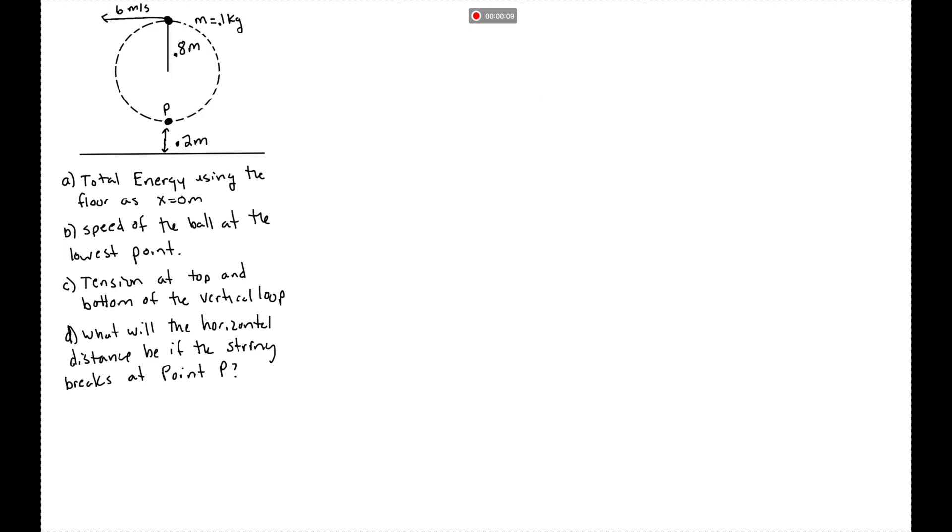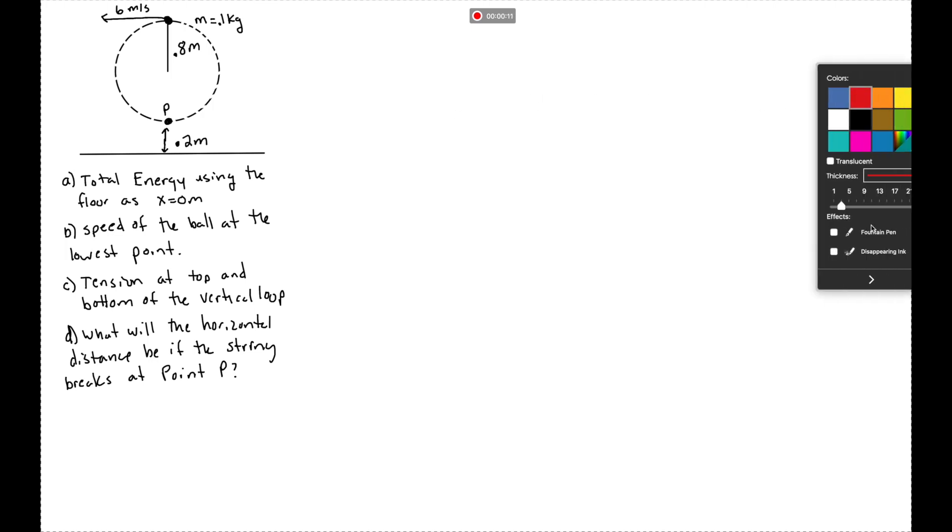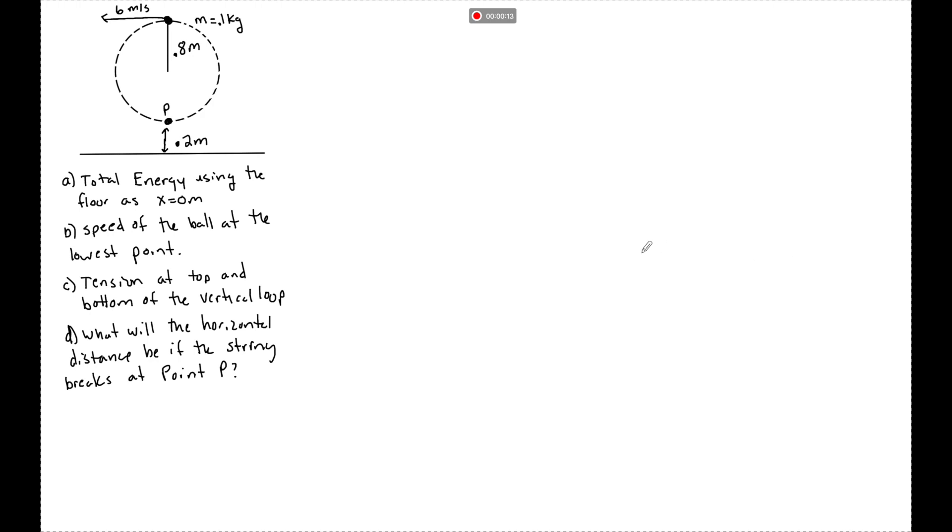What's up students, today I've got some more midterm review questions for you. This involves a vertical loop. So we have this vertical loop where an object is spinning around in a circle. At the top of this circle, which has a radius of 0.8 meters, a ball is traveling tangent to the circle at 6 meters per second.